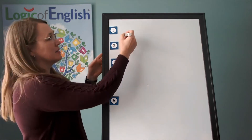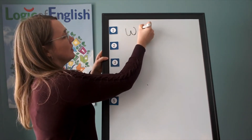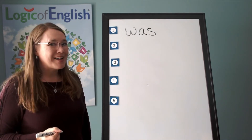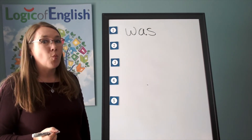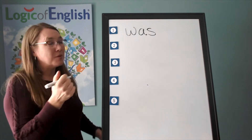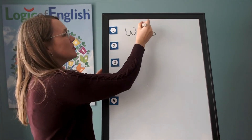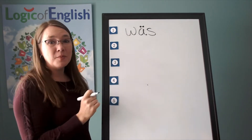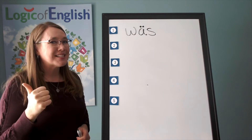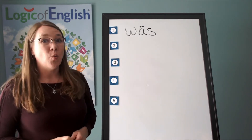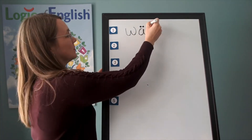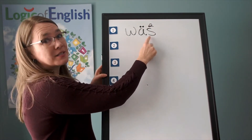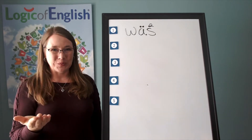Excellent. Now help me write it: wuh, aw, zzz. What sound of A — aw — do we hear in 'was'? The broad sound. Notice it's saying its broad sound after a W. And what sound of S — zzz — do we hear in 'was'? We hear its second sound, zzz. Let's read it: wuh, aw, zzz — 'was.' And what do we say? 'Was.'